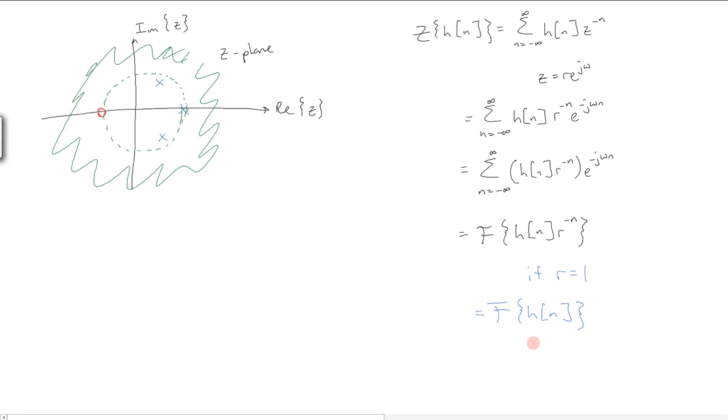In other words, evaluating the discrete time Fourier transform of h of n is equivalent to evaluating the z-transform on the unit circle. Whereas with the Laplace transform, we evaluated along the j-omega axis to find the continuous time Fourier transform, here we're going to use the unit circle.